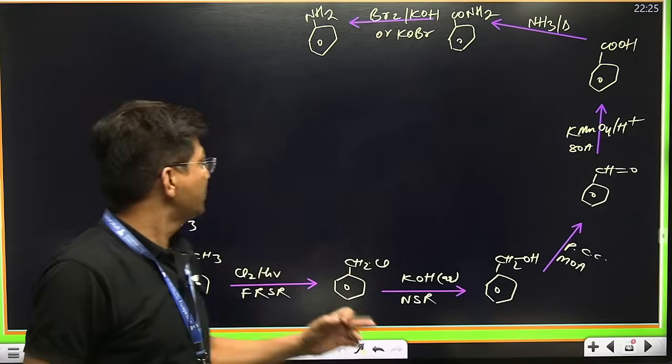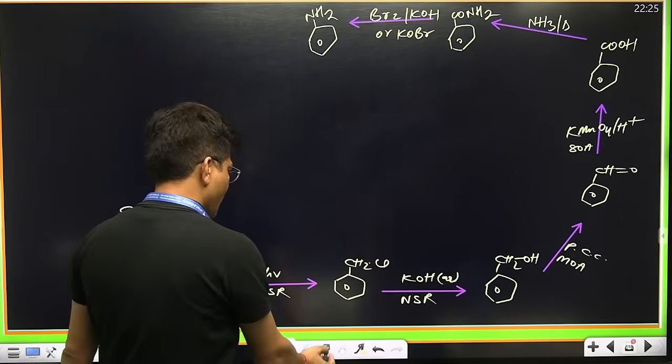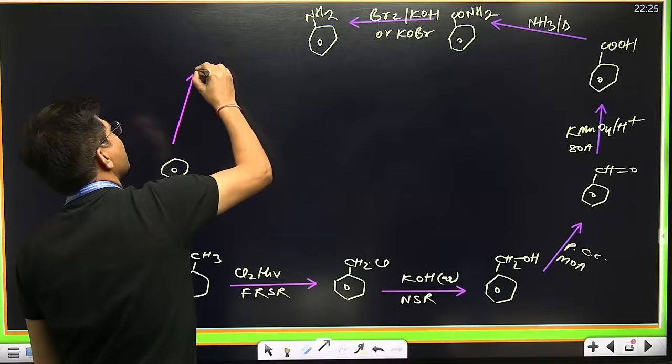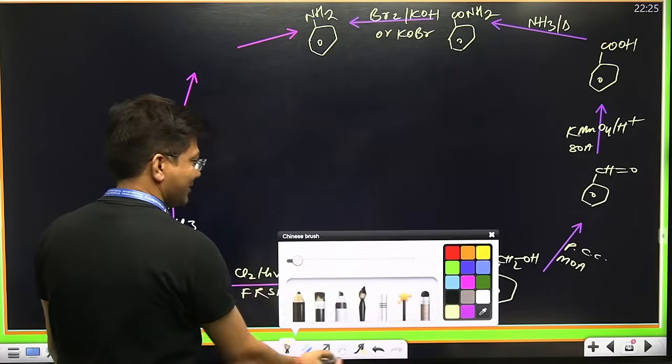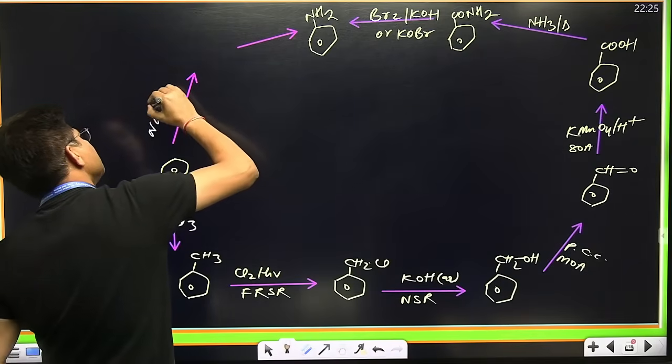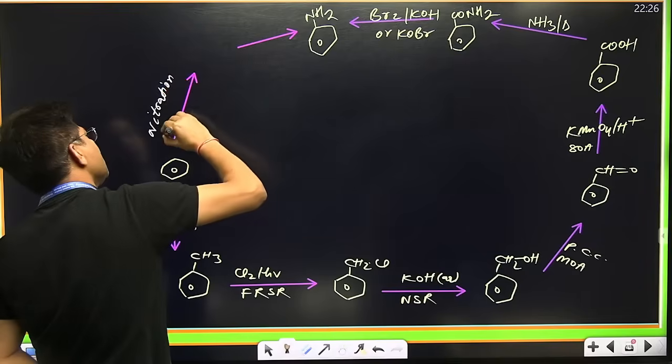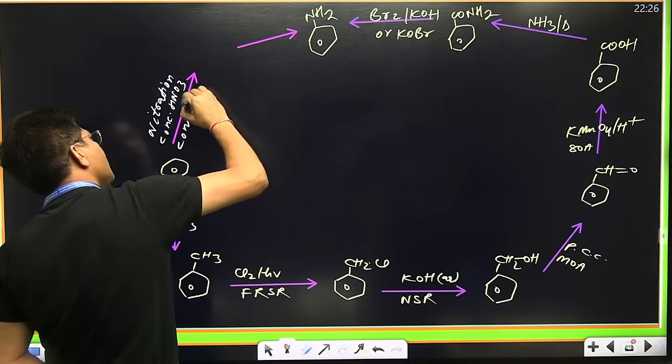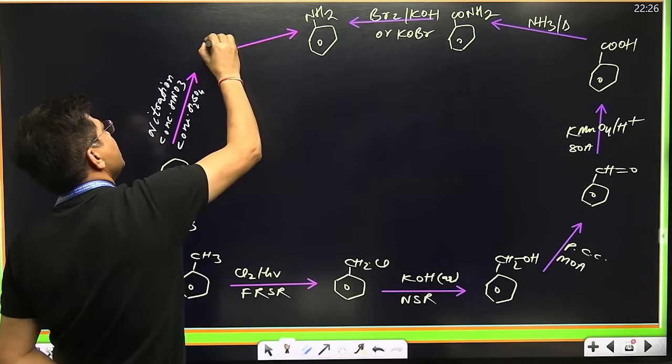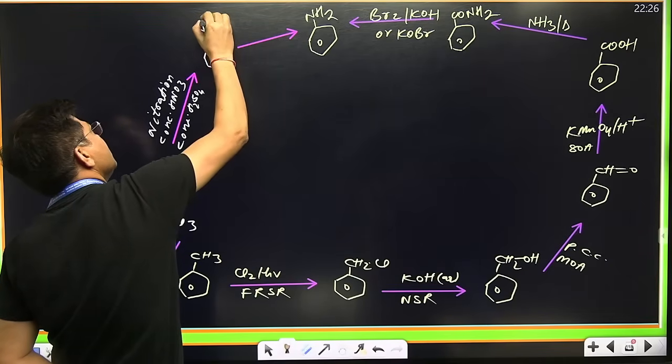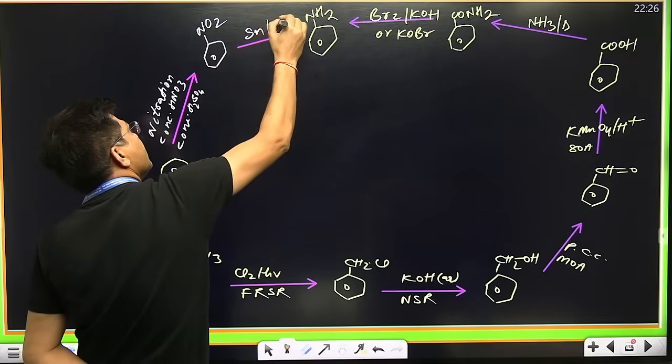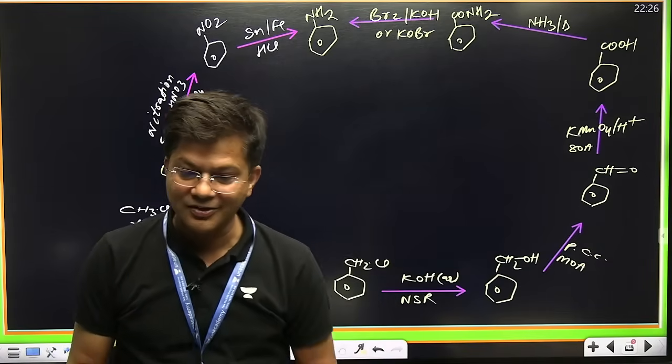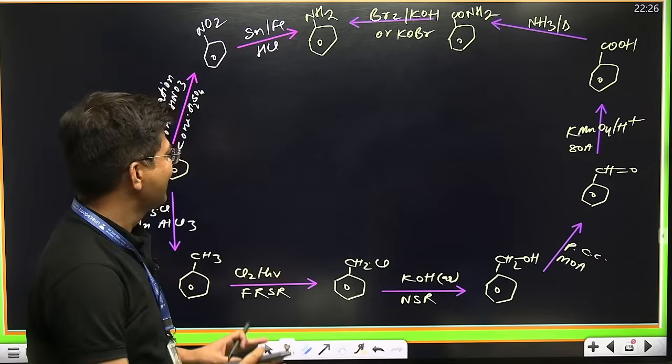If the examiner asks how to convert benzene to aniline, don't go the long route. There's a shortcut. Do nitration using concentrated HNO3 and concentrated H2SO4 to get nitrobenzene. Then do reduction with tin or iron and HCl - you can use any element above hydrogen in the electrochemical series.